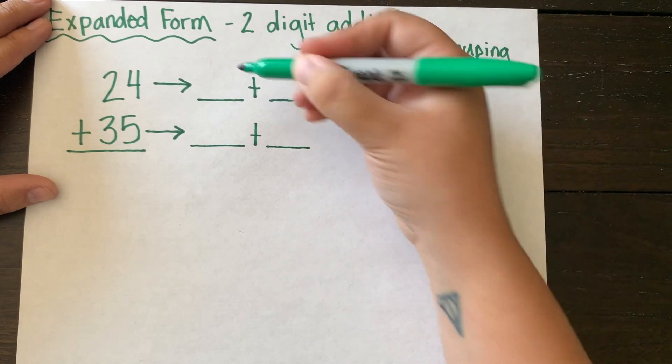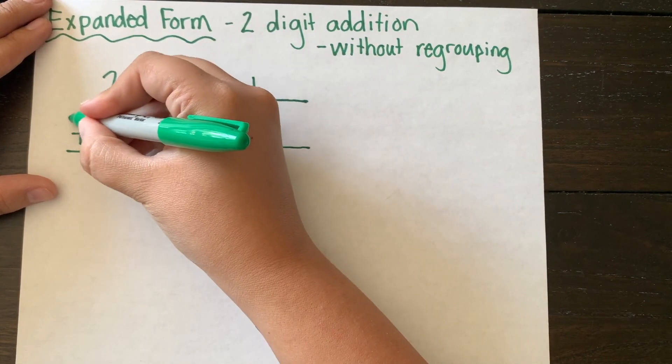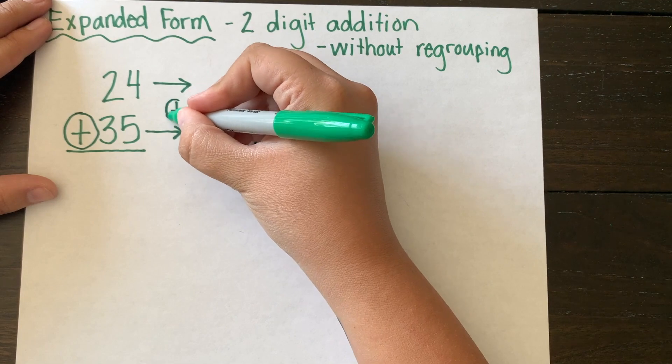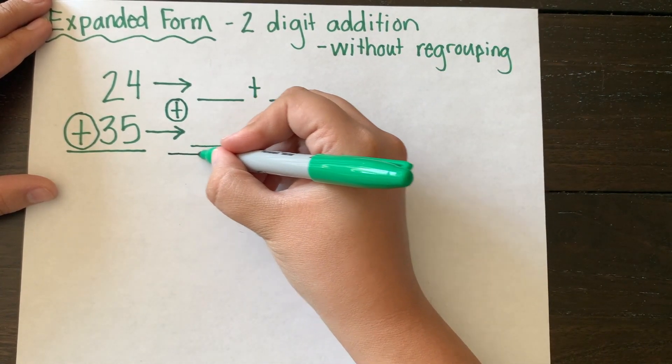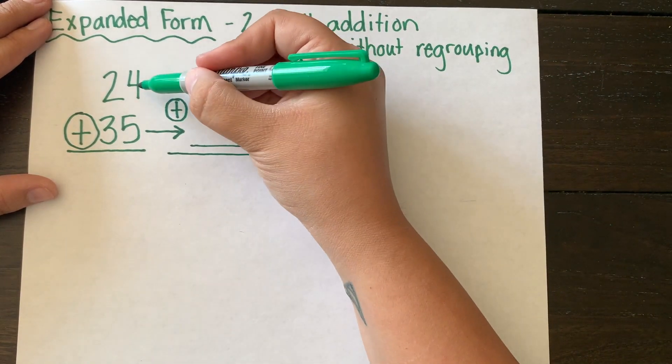So I'm making sure that my place value is lined up, so my ones are on top of my ones, my tens are on top of my tens. I'm circling my operation. I see it's a plus sign, so I'm making sure that I know I need to add when I tally up my columns.